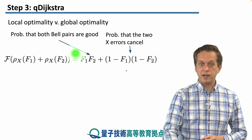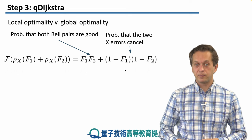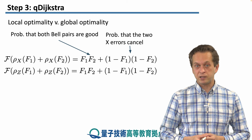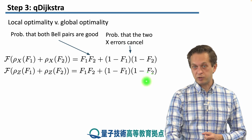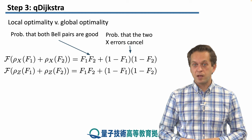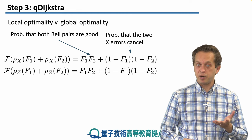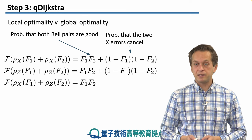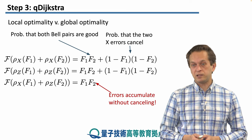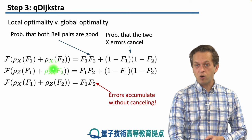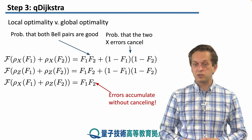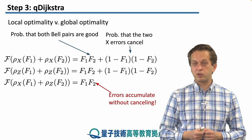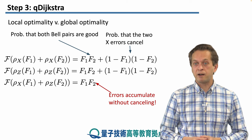The total end-to-end fidelity is given by that expression. Similarly, if we have two states affected by the phase flip channel, we get the same identical expression. However, if one state is affected by the bit flip channel and the other by the phase flip channel, the errors do not cancel — they just accumulate, and we get a fidelity of simply f1 times f2. The only contribution to end-to-end fidelity is the product of the probabilities that both states are unaffected by their respective errors.